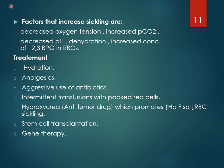Factors that increase sickling include decreased oxygen tension, especially at high altitudes; increased partial pressure of carbon dioxide; and decreased pH during exercise. Dehydration and increased concentration of 2,3-bisphosphoglycerate in RBCs also increase sickling. 2,3-bisphosphoglycerate is an intermediate of the glycolytic pathway and an important regulator of oxygen binding to hemoglobin.